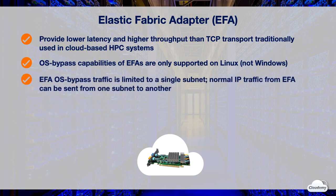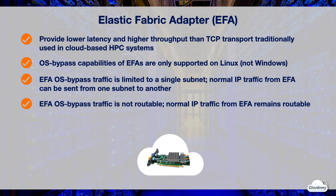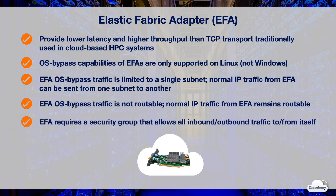EFA OS bypass traffic is limited to a single subnet, which means it cannot leave for a different subnet. However, normal IP traffic from the EFA can be sent from one subnet to another. EFA OS bypass traffic is not routable; however, normal IP traffic from EFA is still routable. In order to use EFA, you need to configure a security group that allows all inbound and outbound traffic to the security group itself.